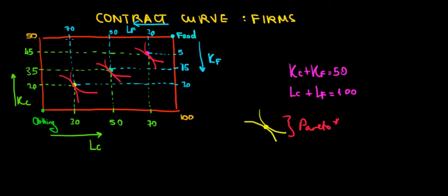Whereas the food company employs 70 units of labor and 30 units of capital. So 70 and 30 add up to 100, and 20 plus 30 add up to 50 units of capital. The same logic goes along these other lines, along these other points.